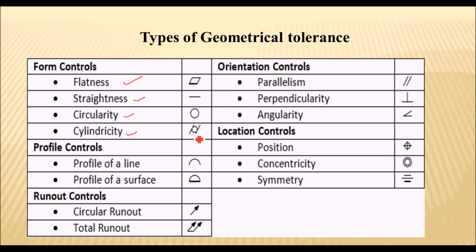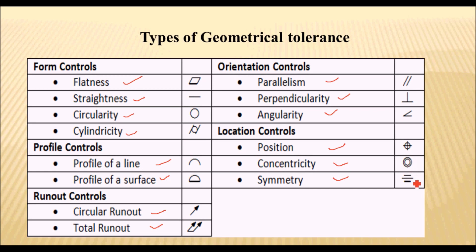Under run out tolerance, we have circular run out and total run out, with their symbols. Under orientation tolerance, we have parallelism, perpendicularity, and angularity, with their symbols. Under location tolerance, we have position, concentricity, and symmetry, with their symbols. So these are the 14 symbols for geometrical tolerance.